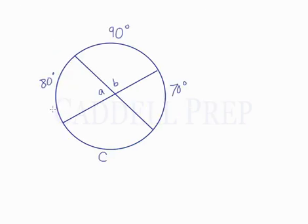In this example, we have the measure of three arcs: 80 degrees, 90 degrees, 70 degrees, and a missing arc. And we also have to find out what these angles are.